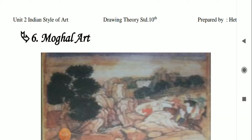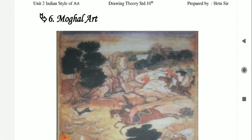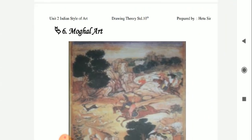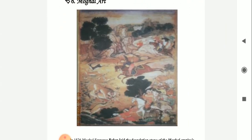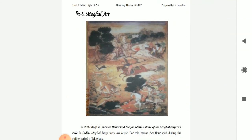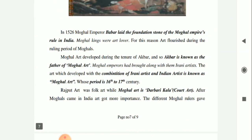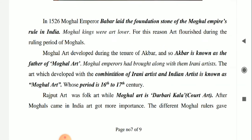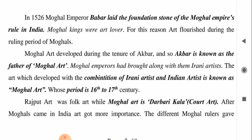Now we come to the next style of art, which is Mughal style of art. First, we'll have a look at the painting of Mughal style of art. It's vertical — all other paintings are mostly horizontal, while this is in portrait mode, not landscape mode. It's a vertical painting.